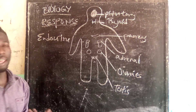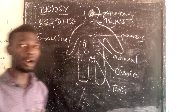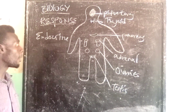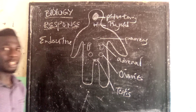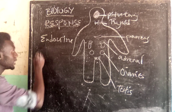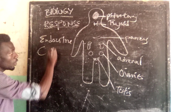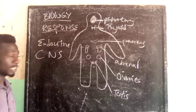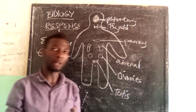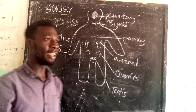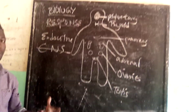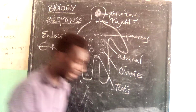So what is response? It is the ability for us to detect stimuli. There are two systems in our body which help us to respond to stimuli. We have the endocrine system and we have also the central nervous system. Our diagram here shows us parts of the glands.